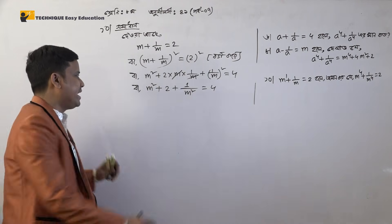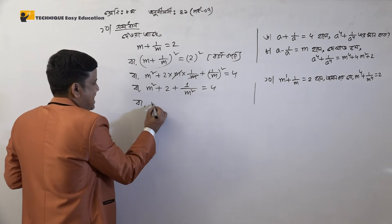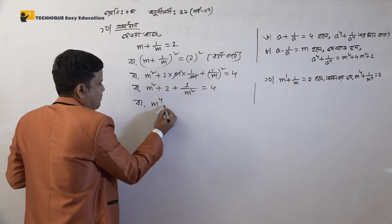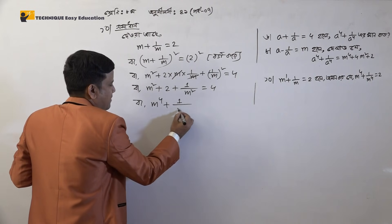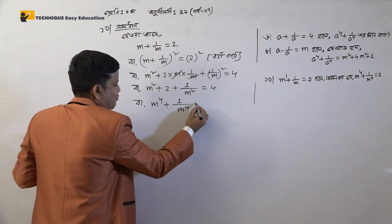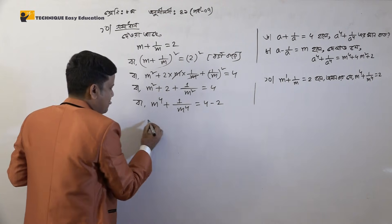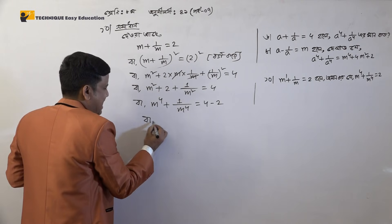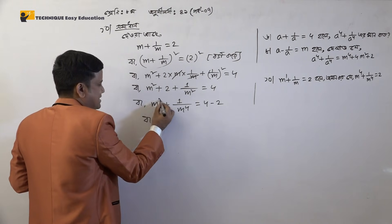2 is plus, which is minus. M power 4 plus 1 by M power 4 equals 4 minus 2, which is 2. M power 4.